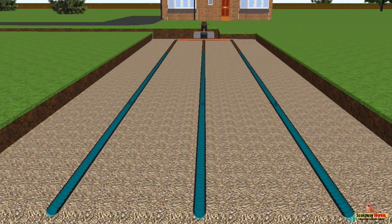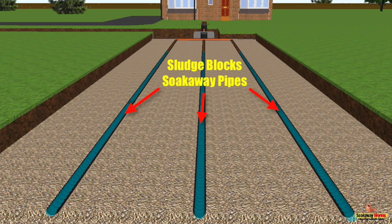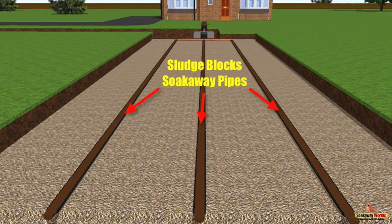As the sludge makes its way deeper and deeper into the soak away pipes, it completely clogs up the entire system, stopping that wastewater from soaking away naturally into the soil and blocking up your entire soak away system.